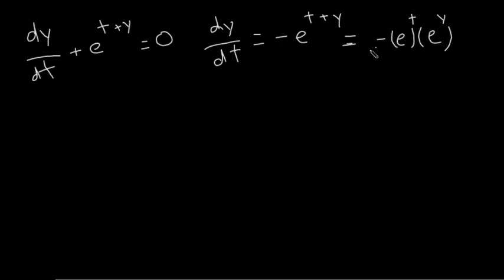So then we can separate our variables. We want to get them each to one side. So I'm gonna bring the, let's see, I'm just gonna bring the e to the t. I'm gonna leave the negative on the right, so we'll have...